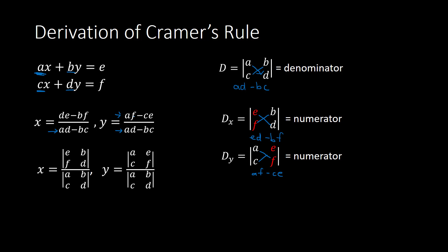To summarize: X equals the determinant of EBFD over the determinant of ABCD, and Y equals the determinant of AECF over the determinant of ABCD. More generally, we replace the top matrix with capital D-subscript-x and the bottom with capital D. Capital D is the determinant found by looking at the coefficients of the variables alone. D-sub-x means we replace the coefficients of x with E and F. D-sub-y means we replace the coefficients of Y with E and F. The denominator is always the determinant of the coefficient matrix.